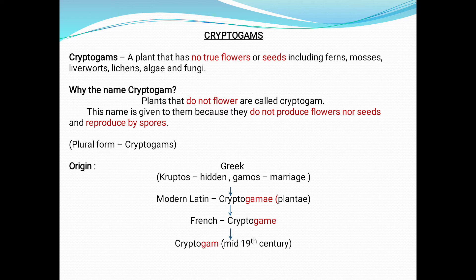Cryptogams are plants that have no true flowers or seeds, including ferns, mosses, liverworts, lichens, algae and fungi. These are the members — they do not show flowers or seed formation. Hence, they are kept under cryptogams.